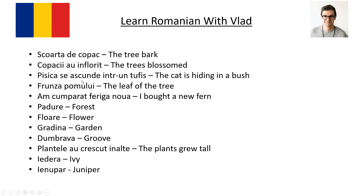Pisica se ascunde într-un tufiș — the cat is hiding in a bush. Tufiș is bush. Frunza pomului — the leaf of the tree. Or frunza crengii — the leaf from the twig, the branch. Am cumpărat ferigă nouă — I bought a new fern. Ferigă is fern.